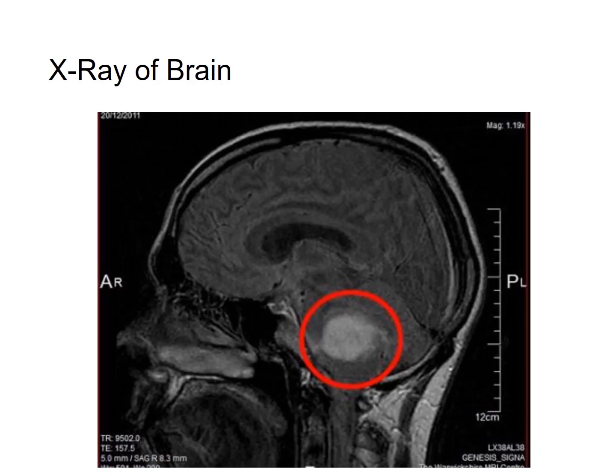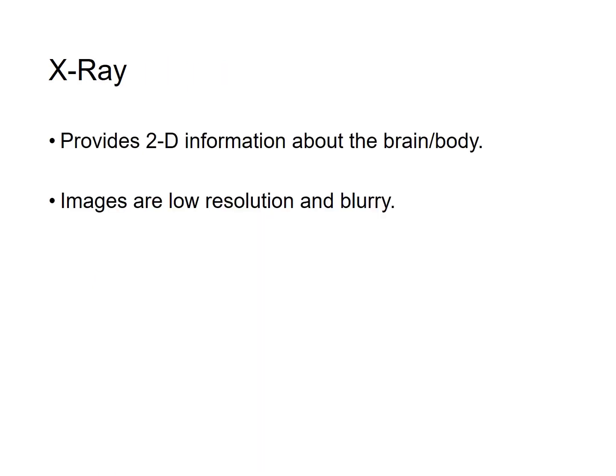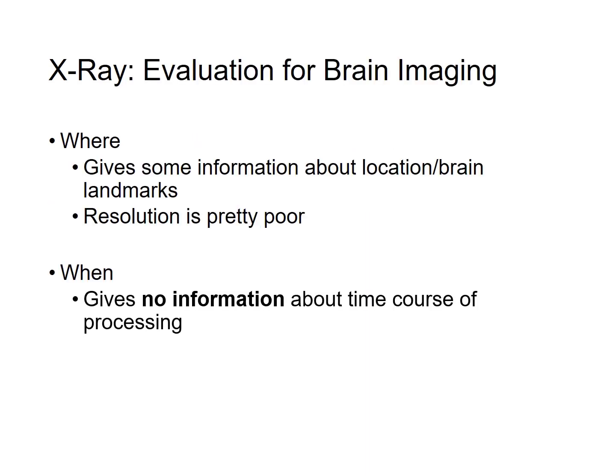Here we can see a brain tumor on an x-ray. The area of lightness indicates to a physician that there is a growth that should not be there. In sum, with x-ray we get two-dimensional views of the body. These images are fairly low resolution and blurry, so the information we get is low quality. When evaluating how well the technique tells us where and when something occurs in the brain, the x-ray fares the worst of all the techniques. The spatial information is low quality, and the x-ray provides no information about when something is occurring in the brain.